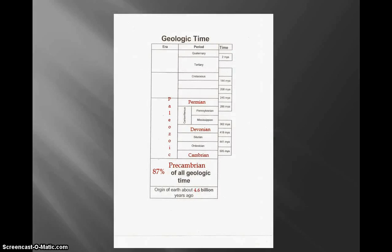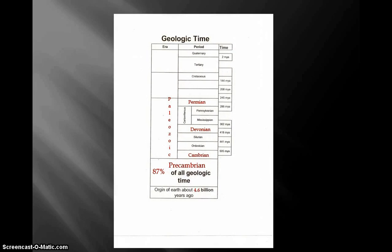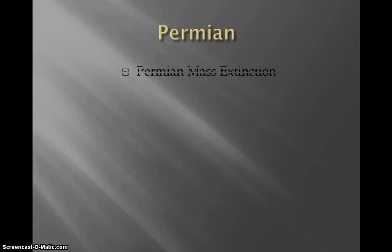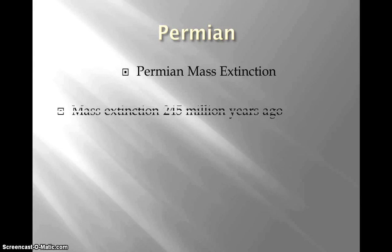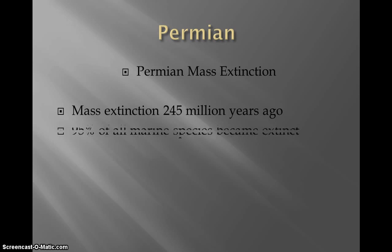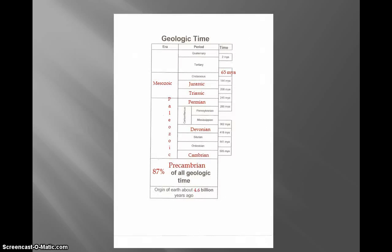Now we're starting the next era on our sheet. The Permian mass extinction occurred 245 million years ago — that's what 'mya' stands for on your note sheet, million years ago. 95% of marine species became extinct.